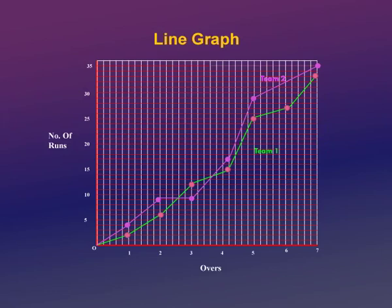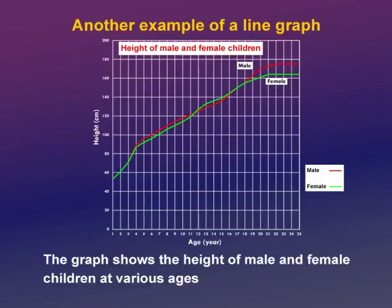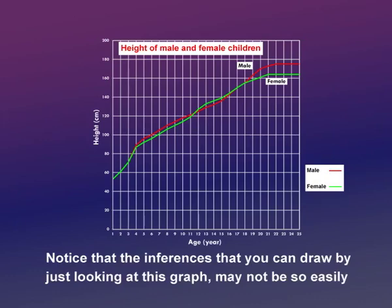A line graph is a graph in which there are lines representing the data. Again on the y-axis we have number of runs and on the x-axis we have overs, and the data shows the rate at which two teams are scoring. Here is another example of a line graph — this graph shows the height of male and female children at various ages.